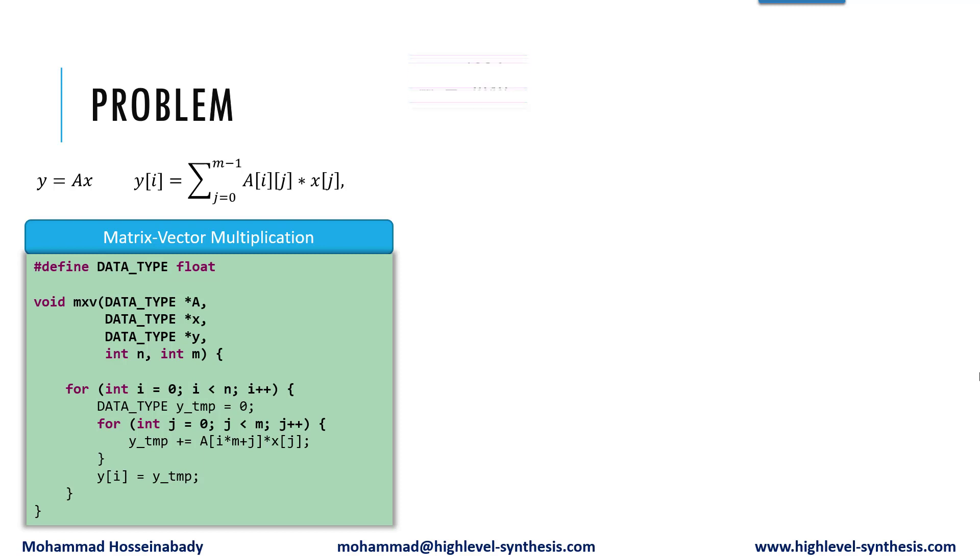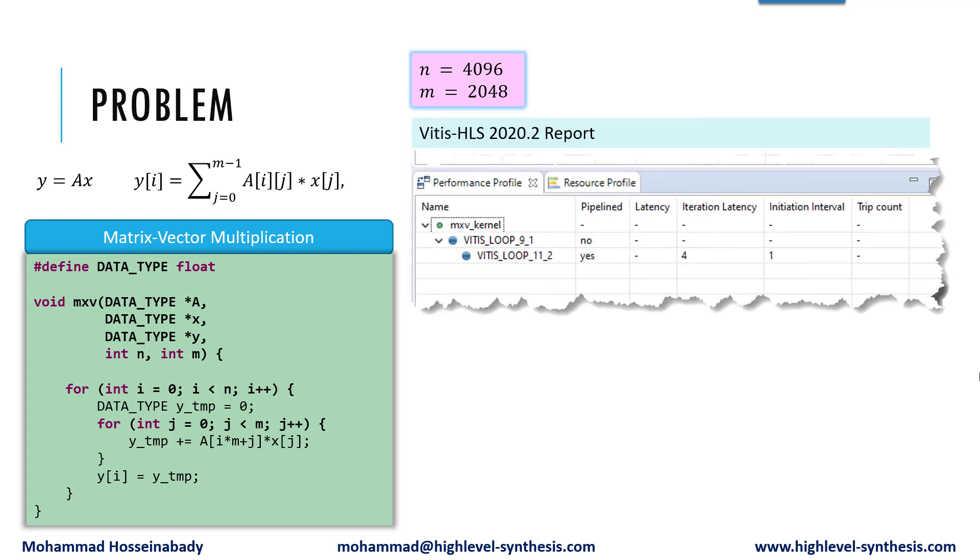If you assume M is 4096 and N is 2048, then this figure shows the synthesis report after synthesizing the code with Vitis HLS 2020.2. As can be seen, the first loop is not pipelined, but the inner loop is pipelined with an initiation interval of 1.